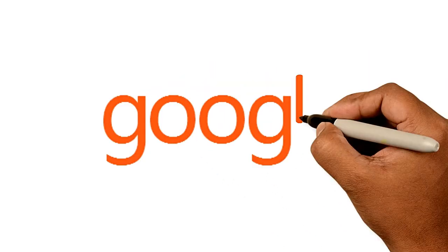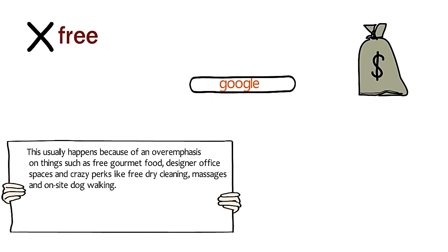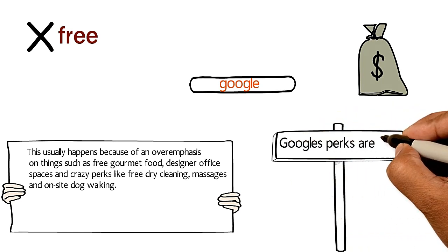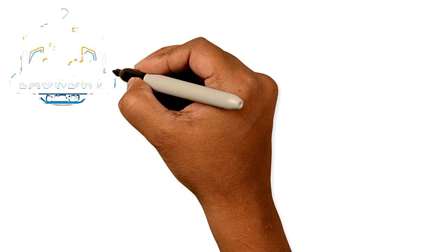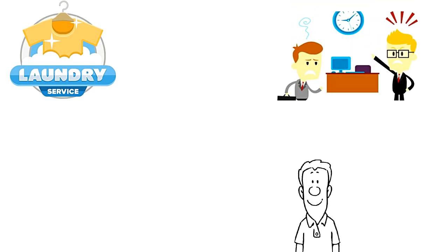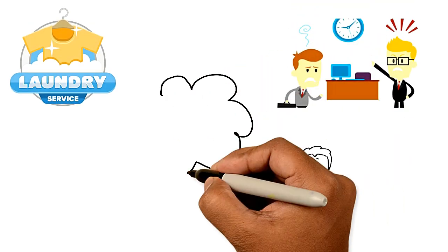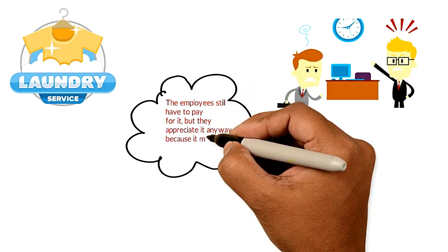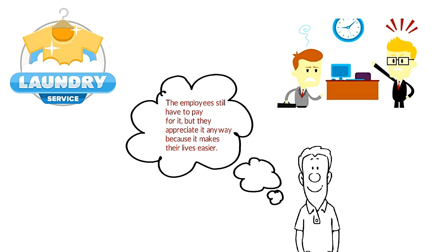He uses the example of Google to show how our approach to employee experience is often backwards, explaining that many of Google's perks are free. For example, when Google offers laundry services to its employees, it simply allows a local company to come in and do it at a cost to the employee. The employees still have to pay for it, but they appreciate it anyway because it makes their lives easier.